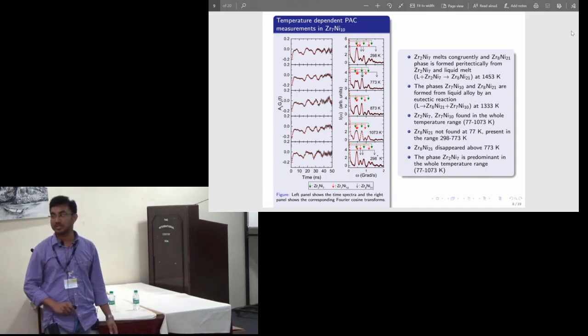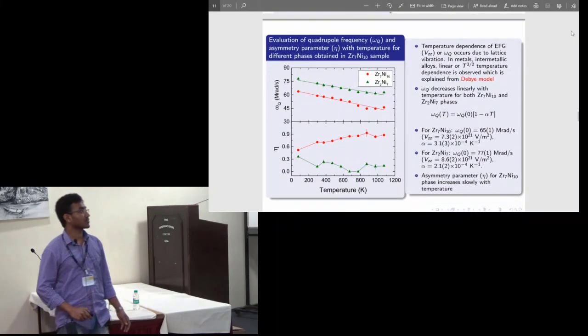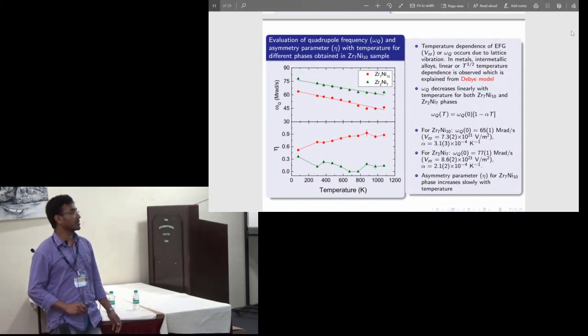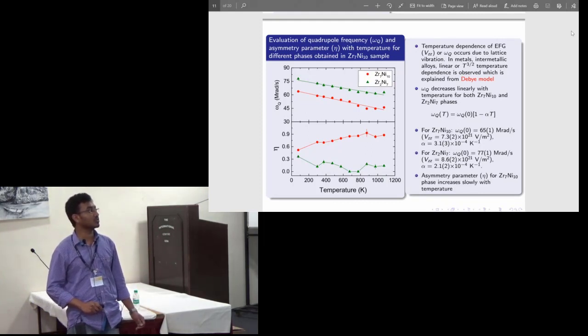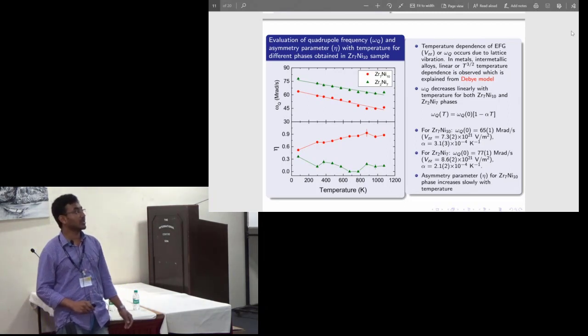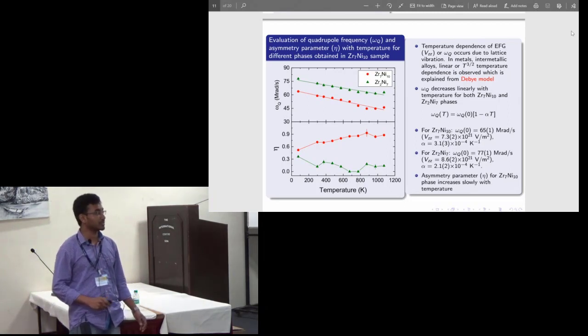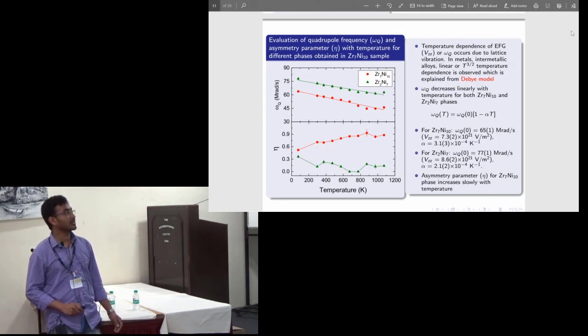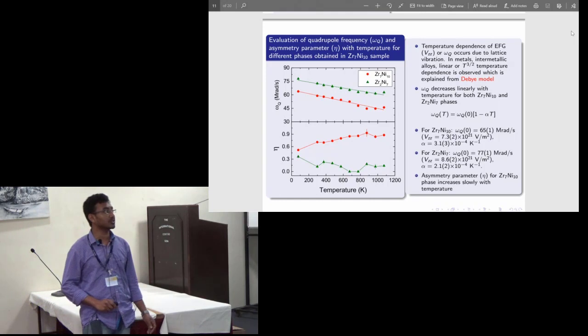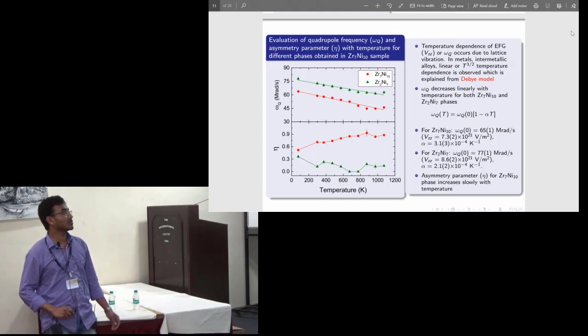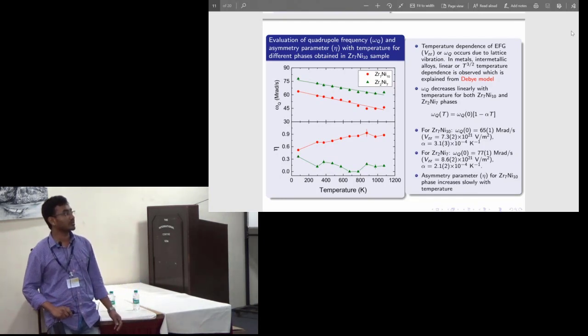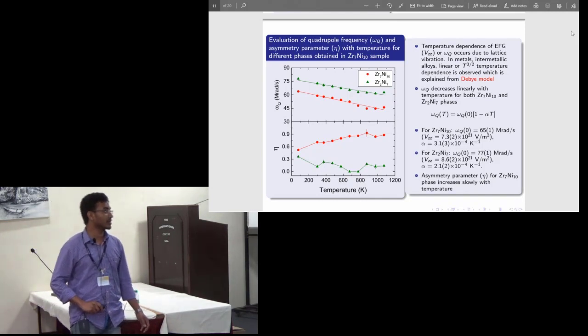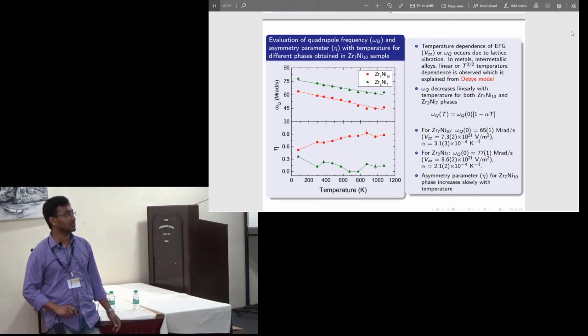Zr2Ni7 was found to be predominant in the entire temperature range. I have plotted the dependence of quadrupole frequency with temperature. It is found that the electric field gradient or omega_q depends on temperature and it can be explained through the Debye model of lattice vibration. In general, in metal or intermetallic samples linear or t^(3/2) temperature dependence is found. In this sample we have found linear temperature dependence for Zr2Ni7 and Zr7Ni10 phase, and the slope value is 3×10^(-4) K^(-1) for Zr7Ni10, and the eta value slowly increases with temperature for Zr7Ni10.